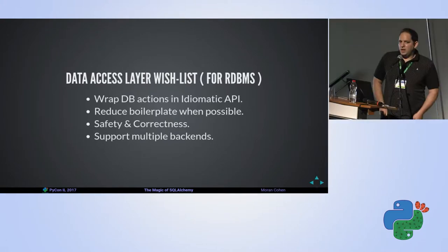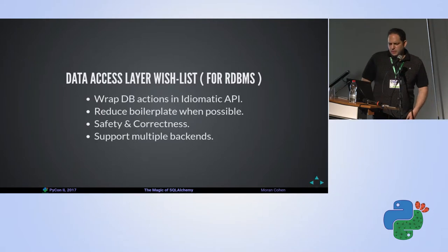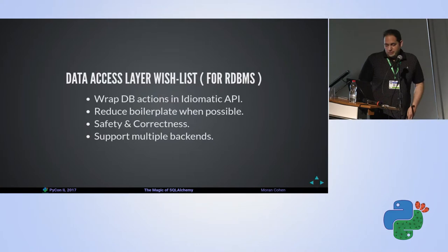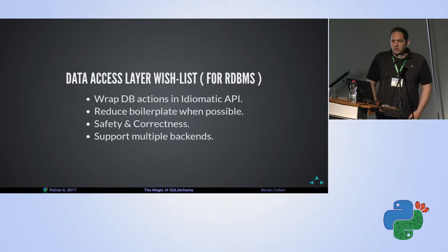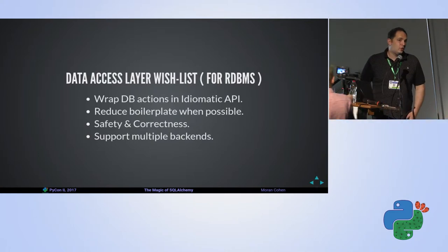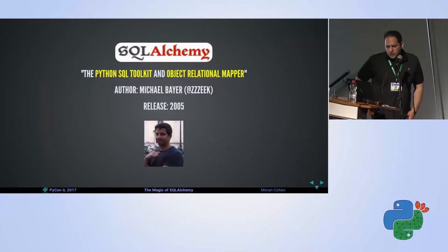Here are a couple of things we would like to see in a data access layer in the context of a relational database. For example, we want to perform database actions in a way that is idiomatic and Pythonic, we want to reduce boilerplate as I explained before, we want everything to be safe and correct, and also to support multiple backends. If you can write for multiple backends such as Postgres, MySQL, Oracle and use a very similar API for all of them, that's a nice thing to have.